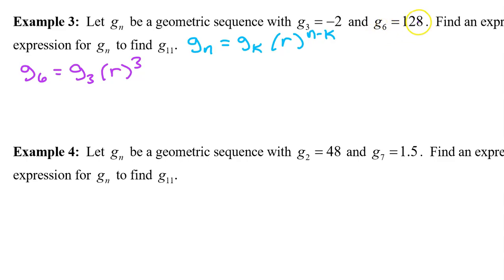g6 is 128. So we have 128 is equal to g3 is negative 2. So negative 2 r to the third power. Dividing both sides by negative 2 gives us negative 64 equals r cubed. Taking the cube root of both sides gives us r equals negative 4.